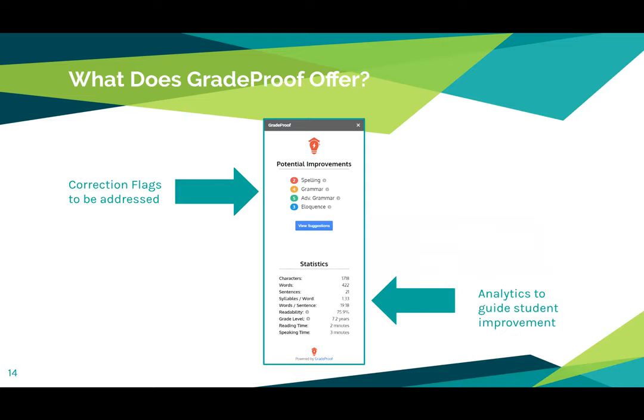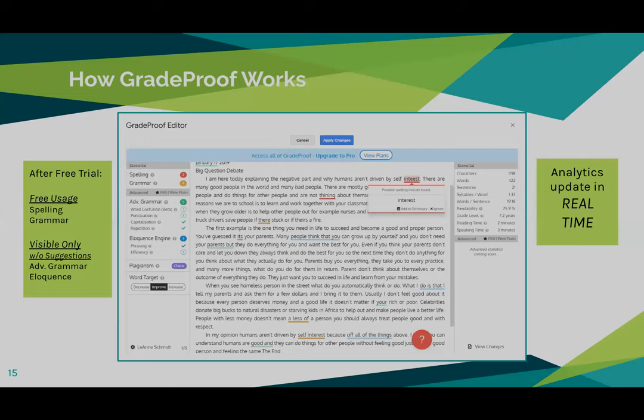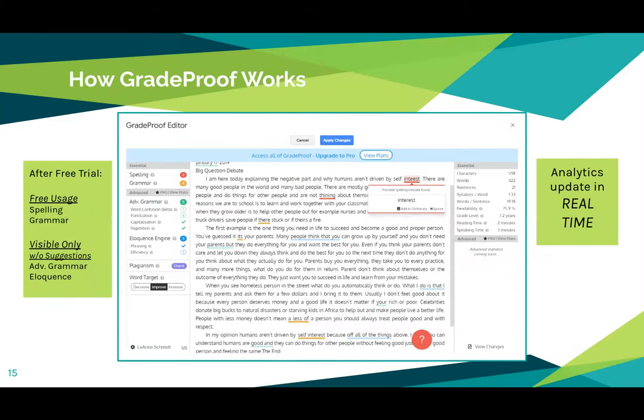Don't forget speaking time when assigning students to write a speech. If GradeProof says it's a five-minute speech, then it's okay — there's no ambiguity. Spelling and grammar checking works basically like word processing programs by underlining the trouble spot and providing information to students when they click there. During the trial period or with the paid version, the green marks for advanced grammar and the blue notations for eloquence function the same way.